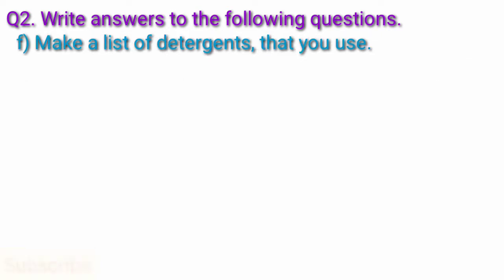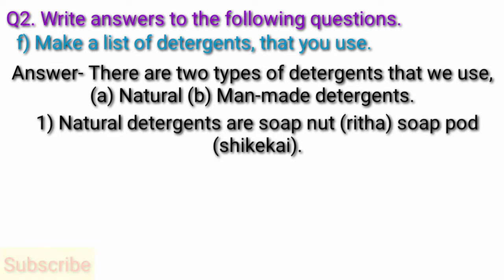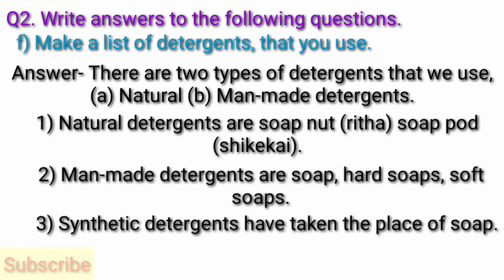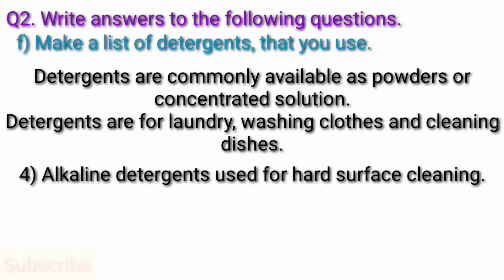Question F: Make a list of detergents that you use. Answer: There are two types of detergents that we use — natural and man-made detergents. Natural detergents are soap nut and soap pod. Man-made detergents include hard soaps and soft soaps. Synthetic detergents have taken the place of soap. Detergents are commonly available as powders or liquid solution — for laundry, washing clothes, and cleaning dishes. Alkaline detergents are used for hard surface cleaning.